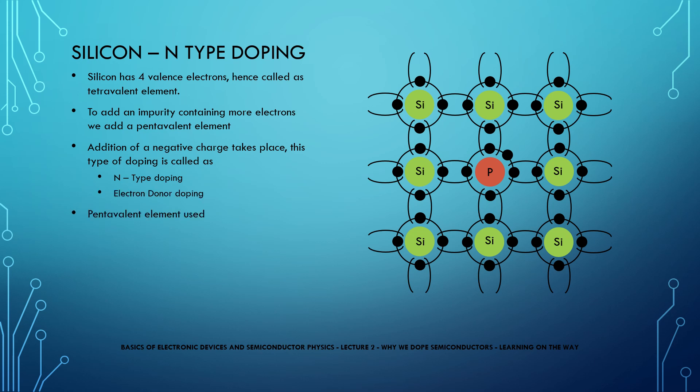The pentavalent element used can be phosphorus, arsenic, or antimony. We can see there is an additional electron.